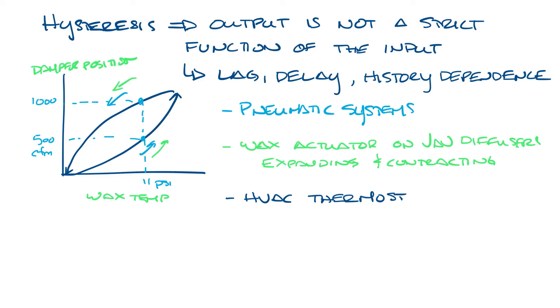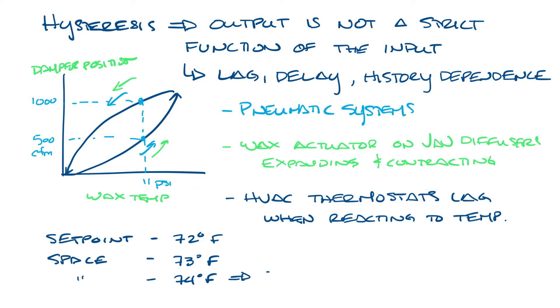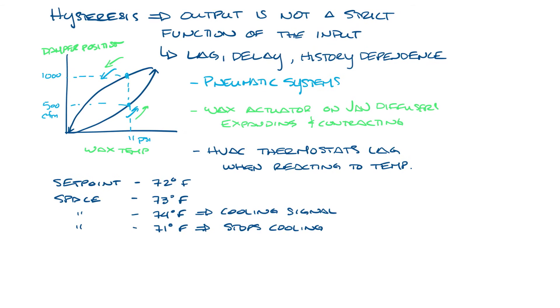And another place we see hysteresis is in thermostats that use a lag in reacting to space temperature. For instance, let's say that the setpoint is 72 degrees and the space temperature is 73 degrees. It may not send a cooling signal until it gets to 74 degrees, and it may keep cooling the space until it gets to 71 degrees. So there's a delay from the 72 degrees to the 73 degrees before it even sends a cooling signal.